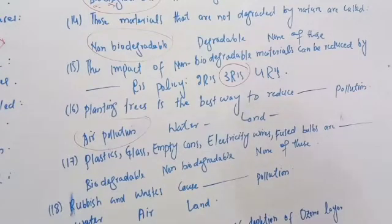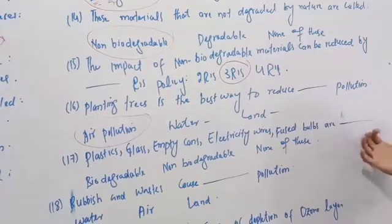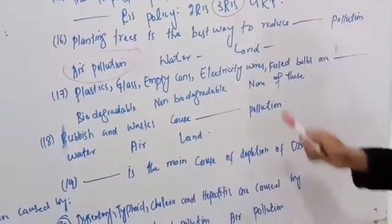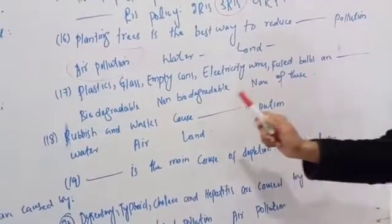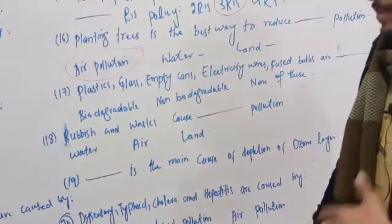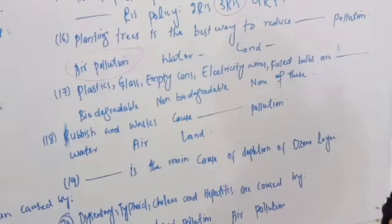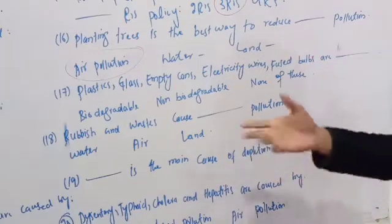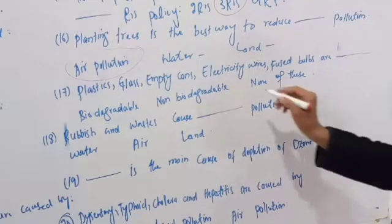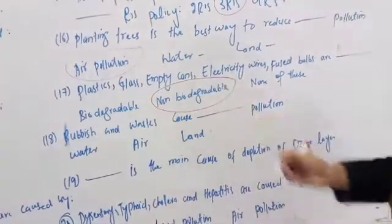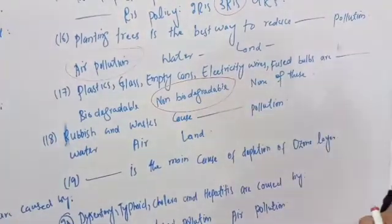Examples of non-biodegradable materials include: plastic, glass, empty cans, electricity wires, fused bulbs, etc. These materials cannot be degraded by nature.